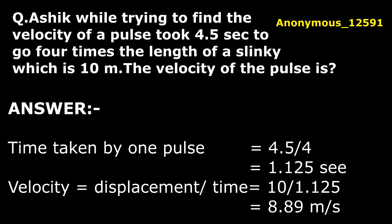Then we are getting 1.125 seconds. This time is taken by one pulse. Velocity equals—then we are finding velocity of that thing. Velocity is displacement by time, same as speed. So we are giving 10 by 1.125. The answer is 8.89 meters per second.